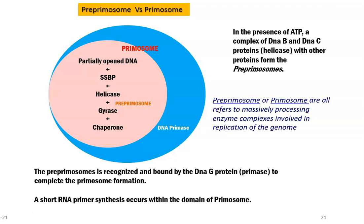Whatever is shown in the pink circle forms together into the large pre-primosome complex. When this pre-primosome is recognized by the DNA primase enzyme, it forms into a primosome. So a pre-primosome is recognized and bound by the dna g gene product — primase — to form the complete structure referred to as a primosome. A short RNA-DNA primer synthesis then occurs within the domain of the primosome, especially to start the replication process.